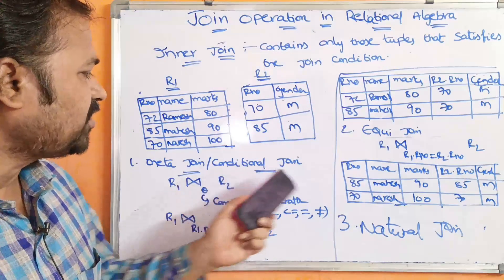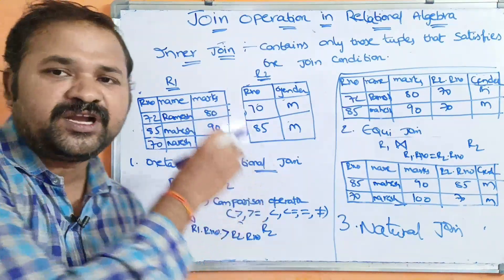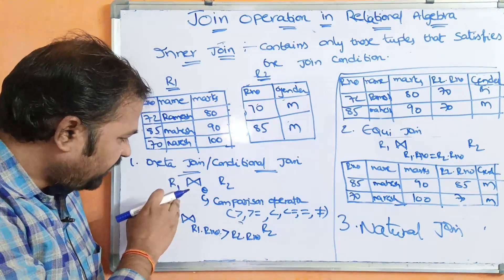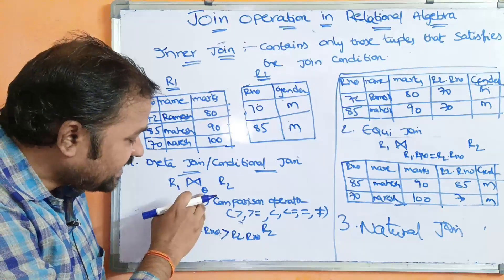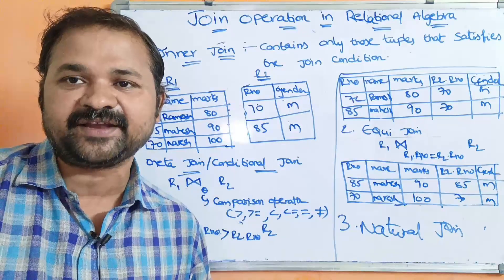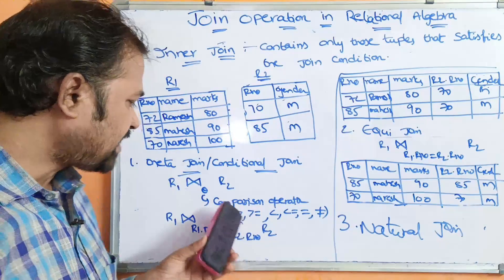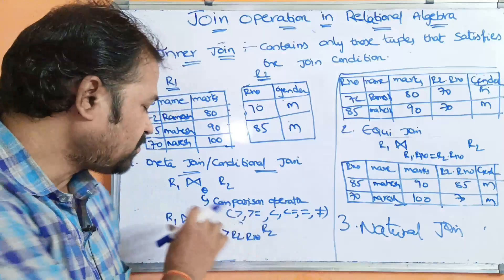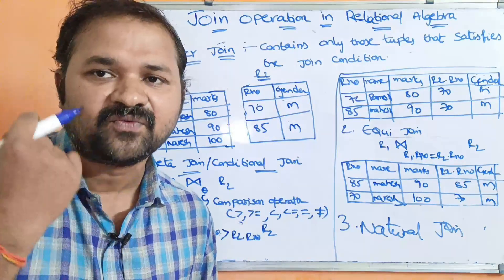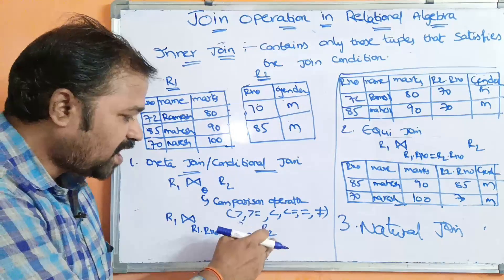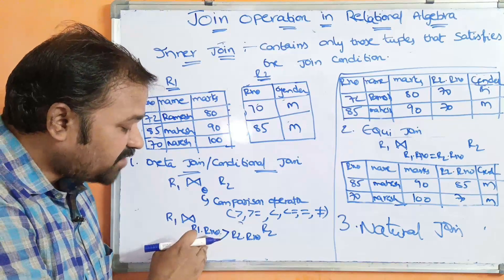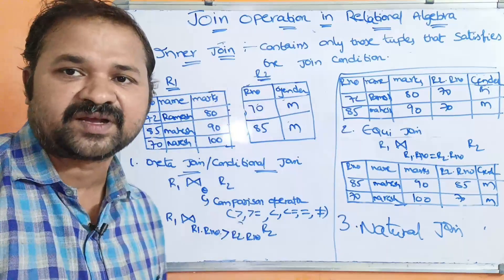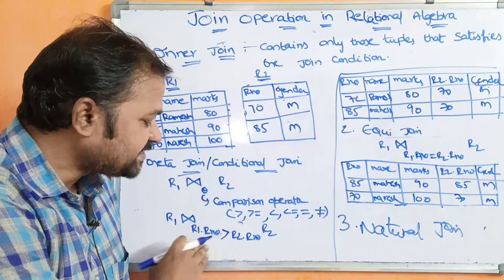Now let us see about theta join or conditional join. Here it produces only those tuples that satisfy the join condition or matching pattern. So R1 theta-join R2 — here theta specifies that we are applying some comparison operator, some conditional operator. The comparison operators are greater than, greater than or equal to, less than, less than or equal to, equal to, and not equal to. Out of these six comparison operators, we need to apply one.